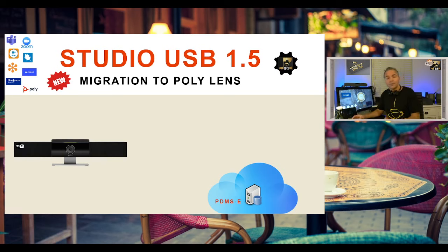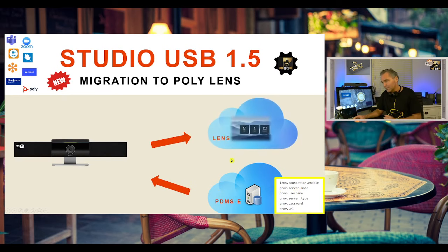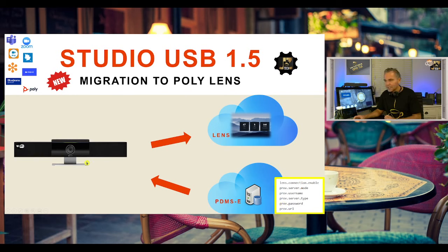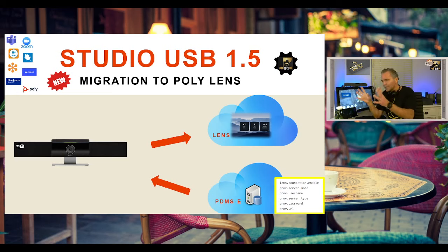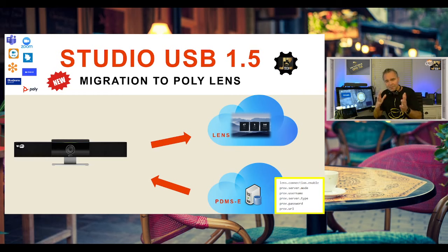Another brand new feature in Studio USB is the migration to Poly Lens - we will be slowly moving away from PDMS. What we support now in 1.5 is that you can add the Lens information and redirect your Studio USB to the Poly Lens cloud platform. You just add this configuration information into your configuration file, push that out to your Studio USB which is hooked up to the Wi-Fi, and it will automatically redirect and show up in the Lens cloud platform. My colleague Uwe created a blog about this configuration - I'll put a link to his blog in the comments where you can find all the information with screenshots and step-by-step description.